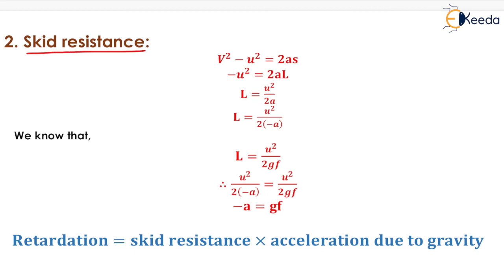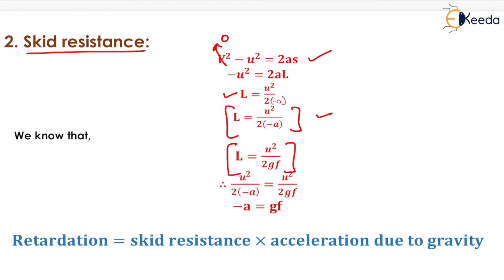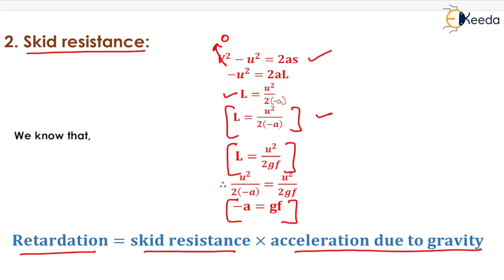For skid resistance, using V² − U² = 2AS with V = 0, we get L = U² / (2·(−A)). From the previous derivation, L = U² / (2GF), so retardation (−A) = GF. That is, retardation equals skid resistance (f) multiplied by acceleration due to gravity (G).